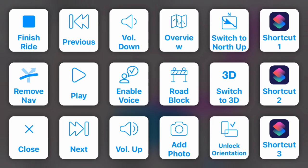Pressing that button calls another button panel with quite a lot of interesting actions nicely sorted into columns — or rows in portrait mode. The first column is about controlling the navigation itself: we can finish the whole navigation, remove the planned route temporarily, or close the button panel. The second column is about media control, and the third column is about the navigation voice — you can increase or decrease the volume or disable it completely.